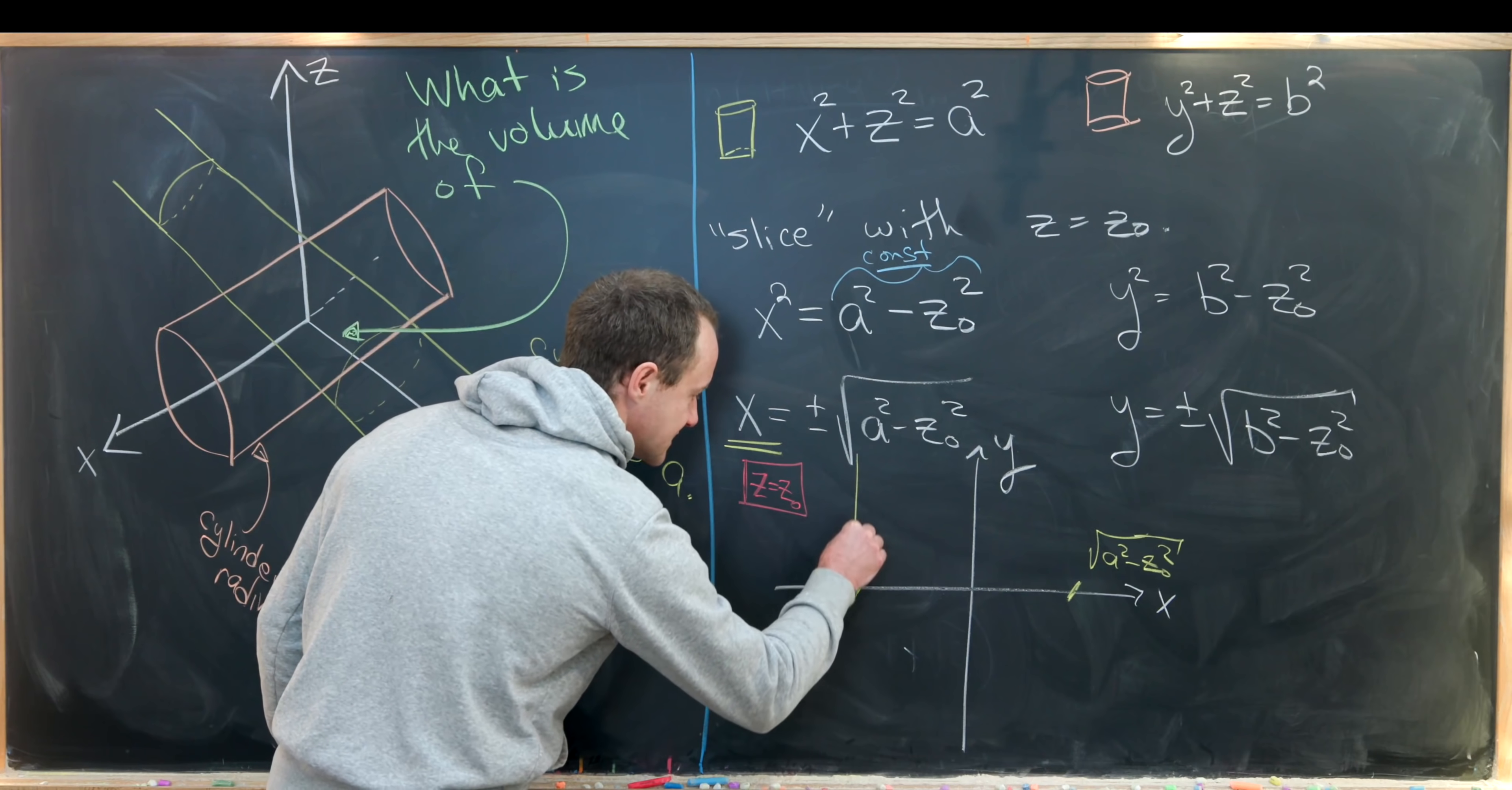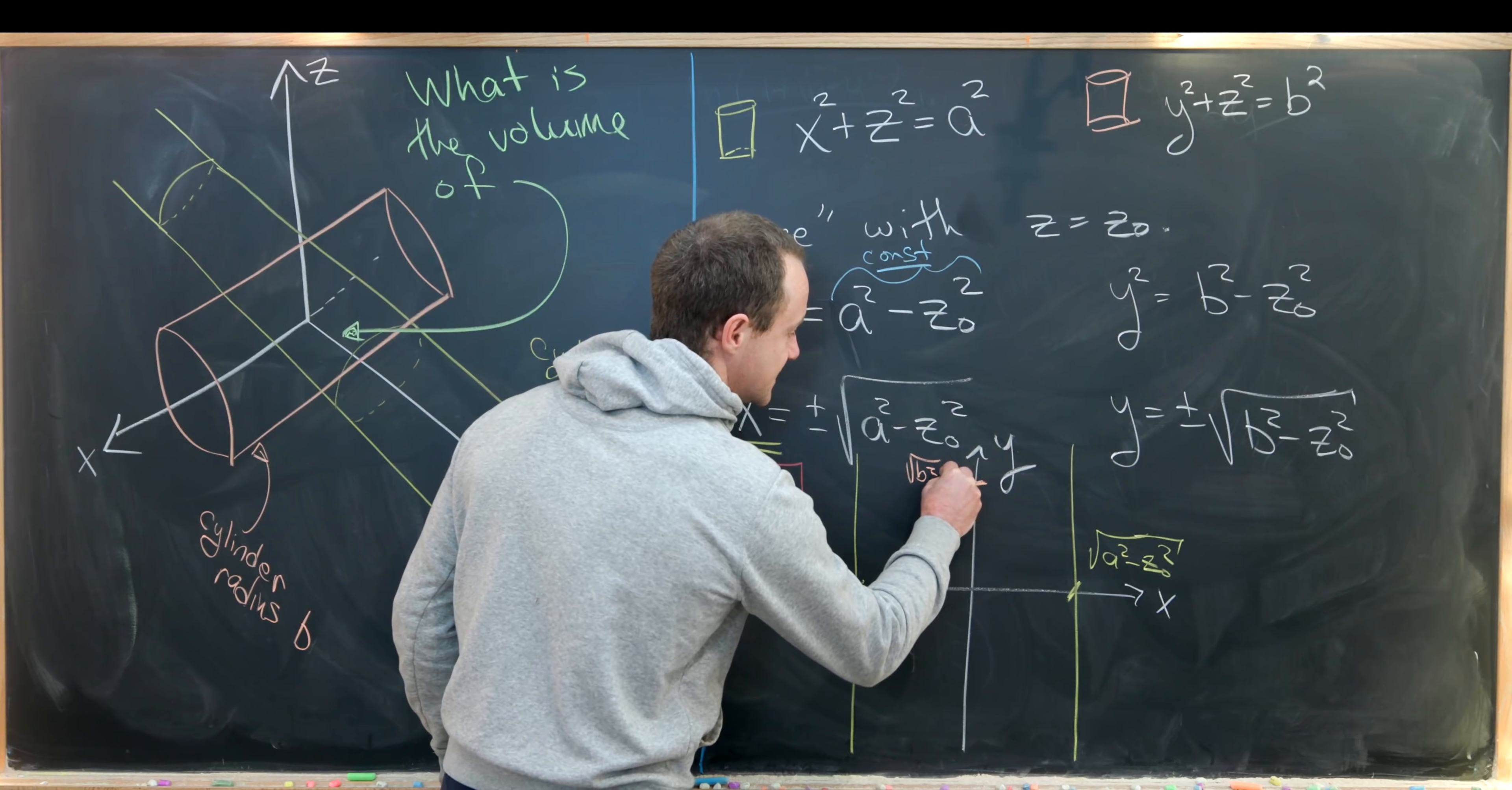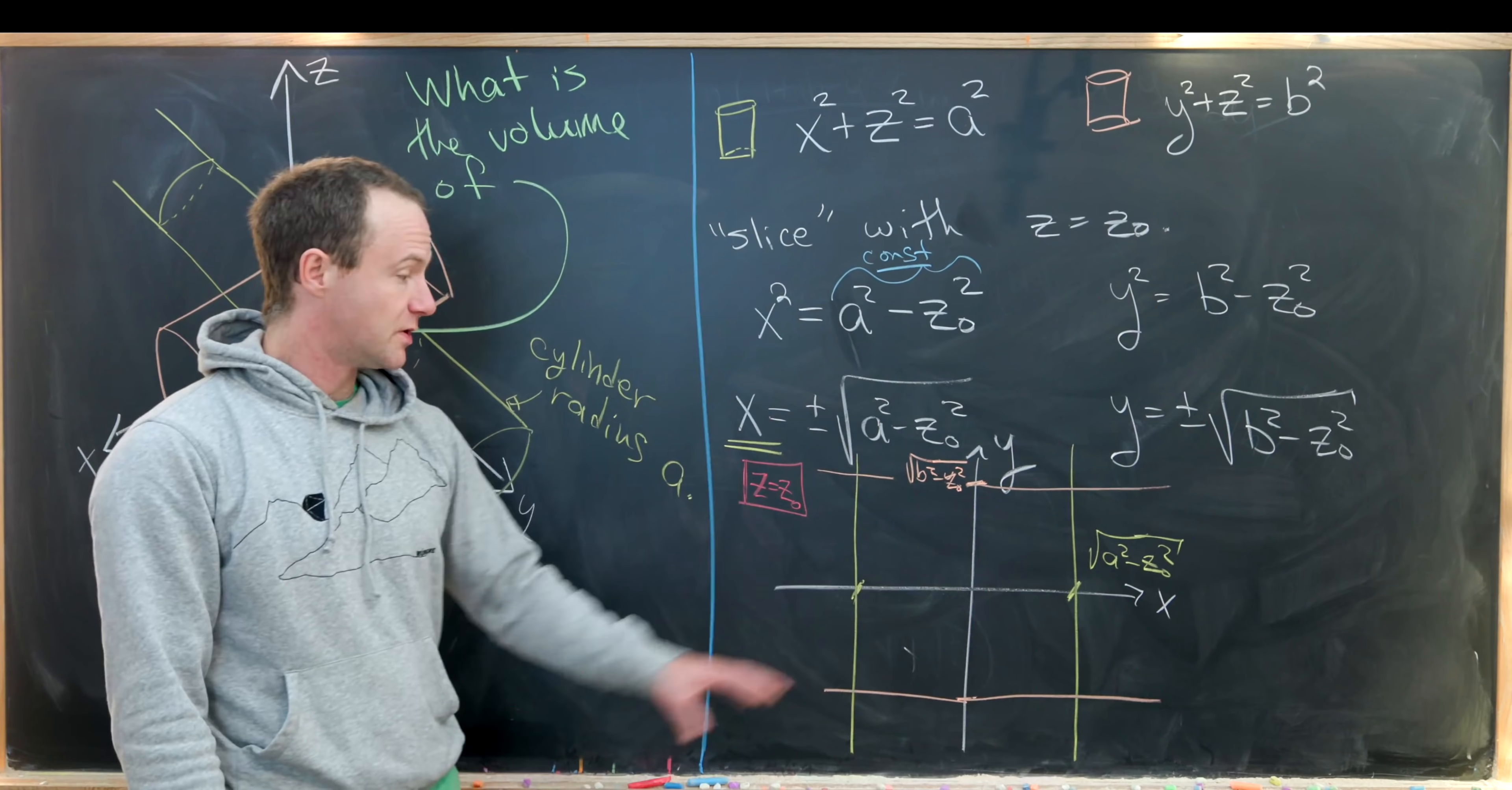If x is always this value, that creates a vertical line. We can similarly do the same thing for y. So maybe we'll put here, this is y equals the square root of b² - z₀². If y is fixed there, that represents a horizontal line. And then the negative copy of that would be down here. But look what we've got - we've got a rectangle.